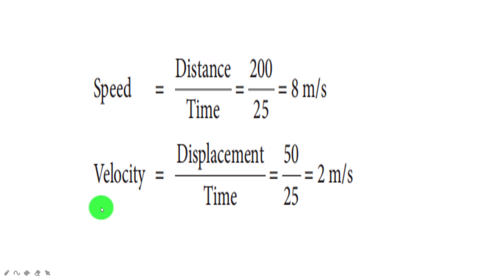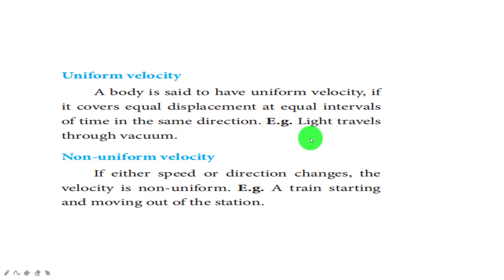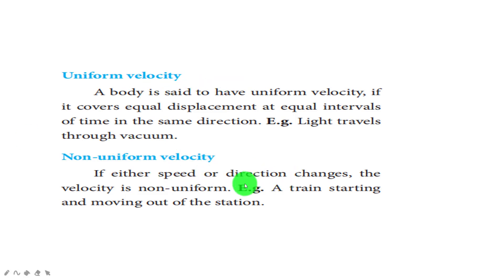The speed is 8 m/s and the velocity is 2 m/s. The key is replacing distance with displacement. Uniform velocity means a body covers equal displacement in equal intervals of time in the same direction — since velocity is a vector quantity, direction matters. Example: light travelling through vacuum. Non-uniform velocity occurs if either speed or direction changes. Example: a train starting and moving out of a station.